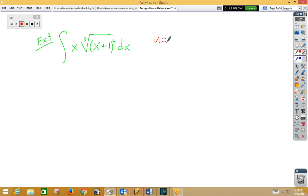we have u is the inside function, x plus 1. Du would be 1dx, so my 1dx becomes my du. I've got a cube root of u squared. Now I've got this extra x,